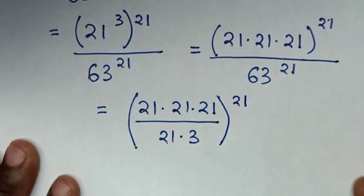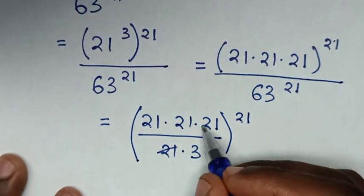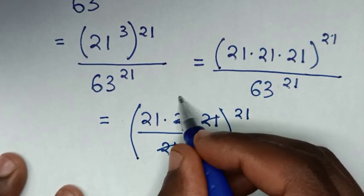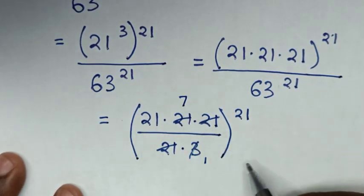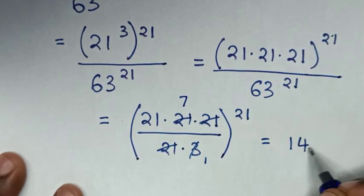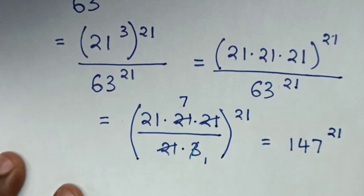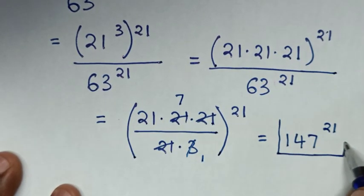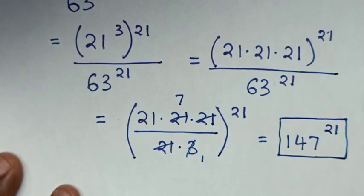Now to simplify: this 21 will cancel, this 21 will cancel, then this will cancel by 1 and this by 7. Then 21 times 7, it will be equal to 147 power of 21. Therefore this is our final answer — same as the answer in the first method.